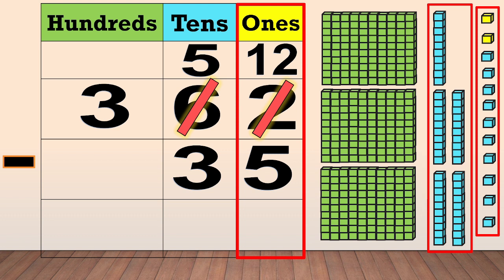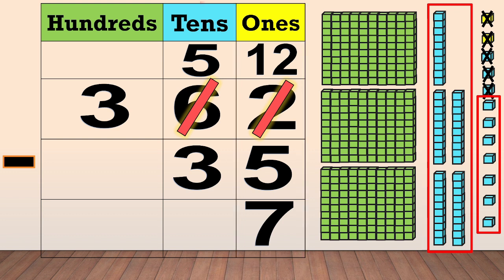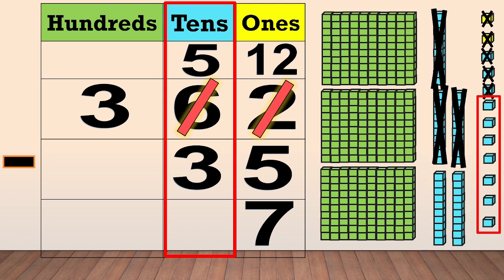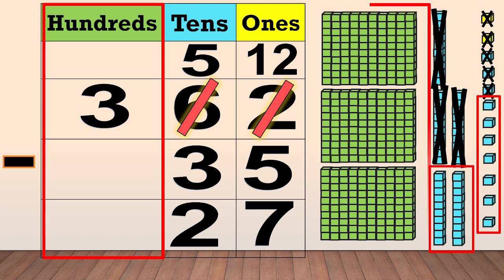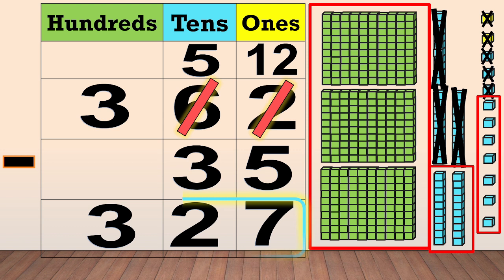Next, we subtract the ones: twelve minus five equals seven. Then we subtract the tens: five minus three equals two. Now we subtract the hundreds — we have three hundreds, but there is no number in the hundreds column, so there is nothing to subtract. We bring down the three hundreds. So, 362 minus 35 equals 327.